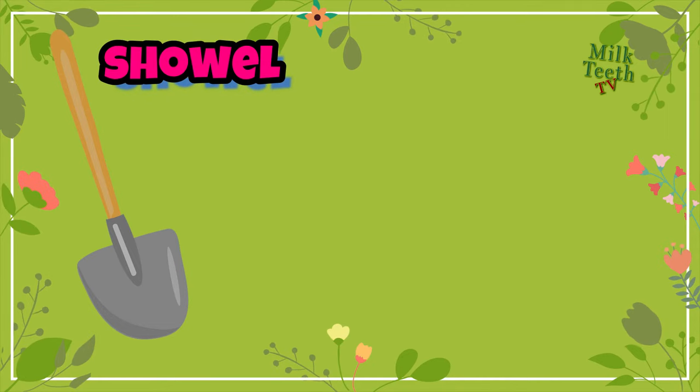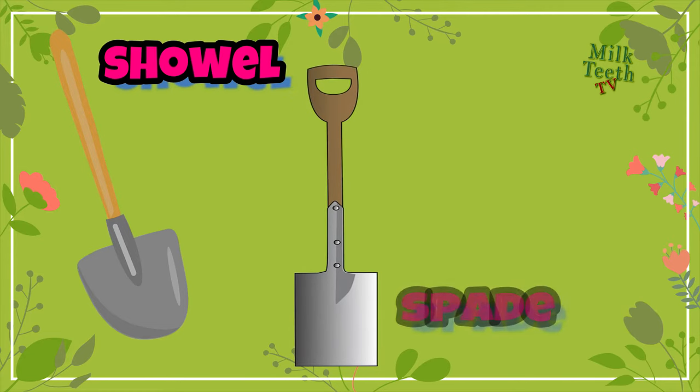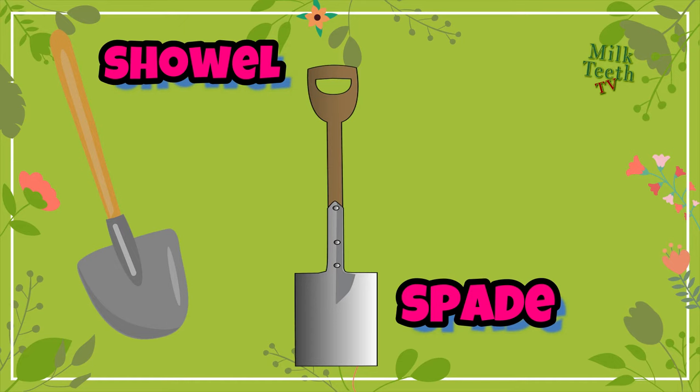This is a shovel. A shovel has a long handle with a round broad blade, used for loosening, digging, and throwing the soil, snow, and even coal. This is a spade. A spade also has a long handle but with a flat iron blade at the bottom.